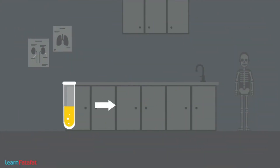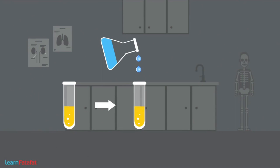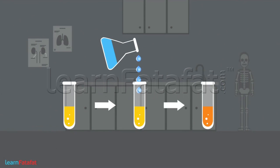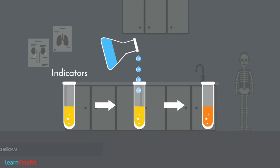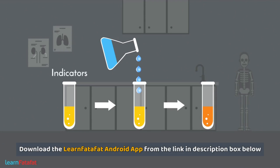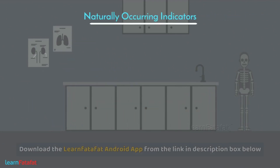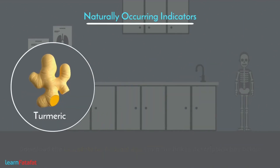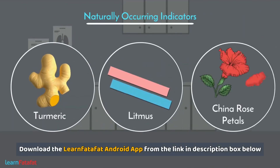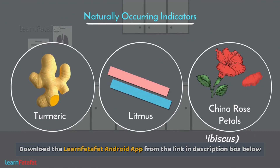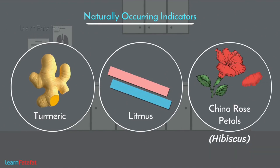There are certain substances which, on mixing with other substances, cause a change in their color. Such substances are called indicators. Some of the naturally occurring indicators are turmeric, litmus, china rose petals (also called hibiscus), etc.